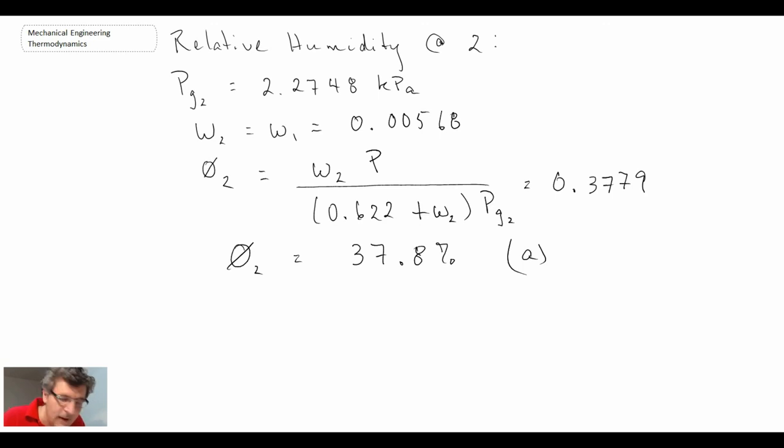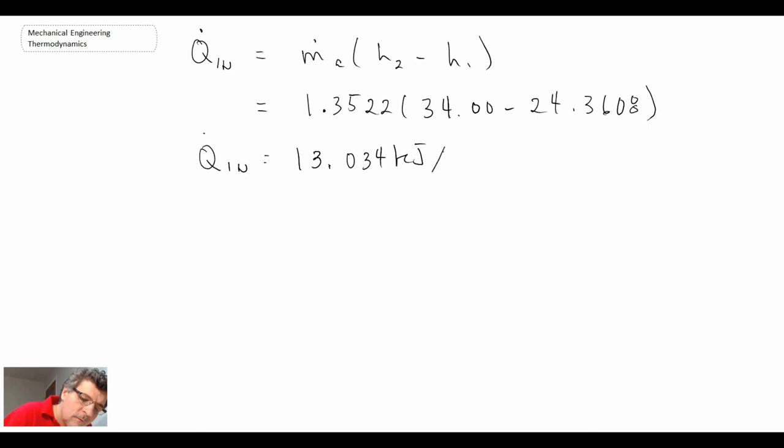The final thing they want us to determine is the heat transfer in our heating section. For that, we go back to the first law between point 1 and point 2, which we expressed in terms of the flow rate of dry air. We have all the terms required to solve for this now. That's in kilojoules per second. Given they gave us flow rate per minute, I'll express it in kilojoules per minute. And that gives us the answer to part B.